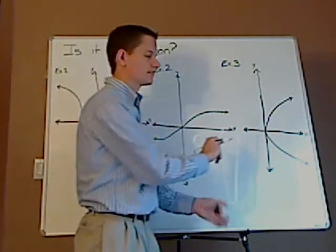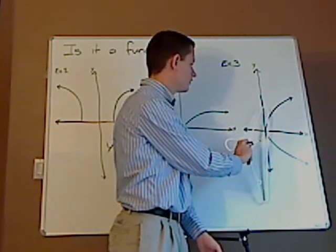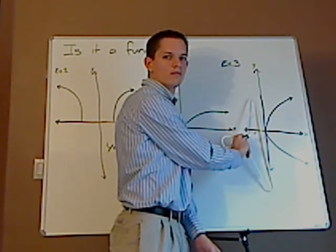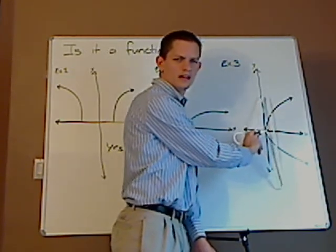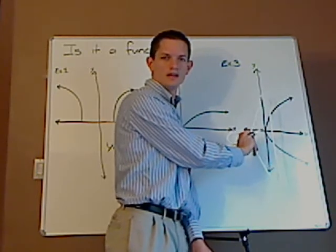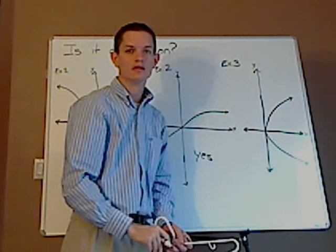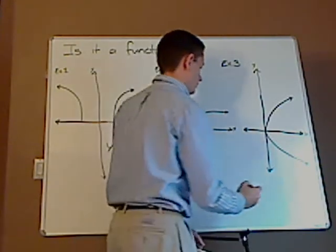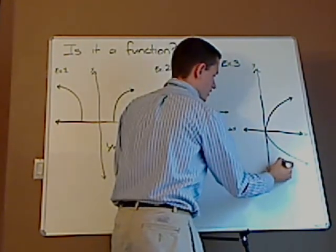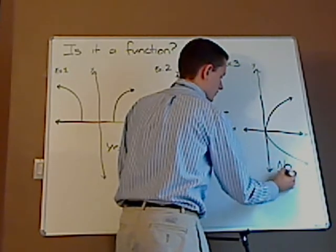What about this last guy over here? Now at first, oh, one point. And then two. Is that more than one? Yes. Since it's more than one, it's going to fail the vertical line test. So therefore, it would not be a function.